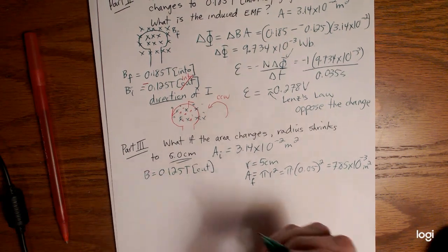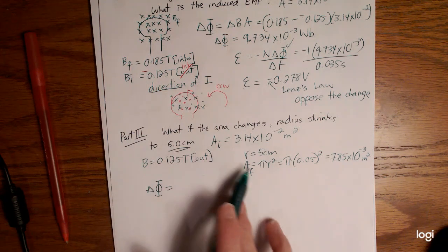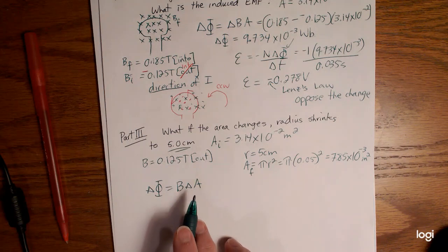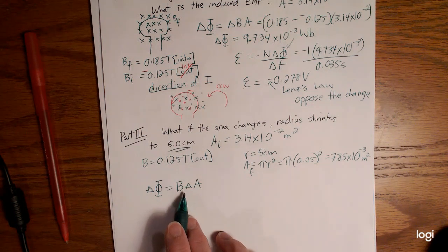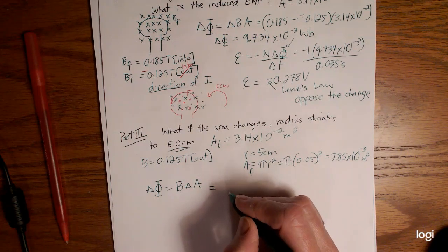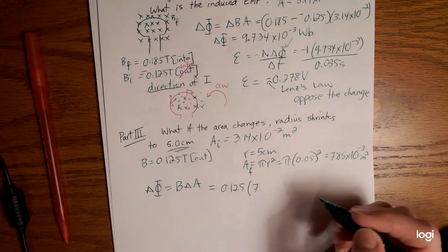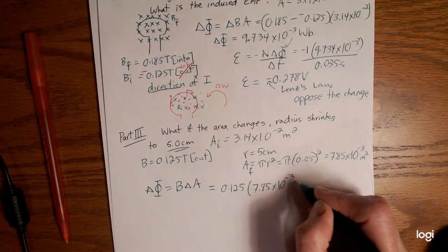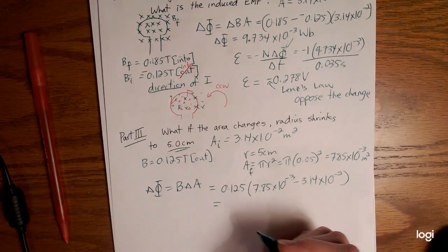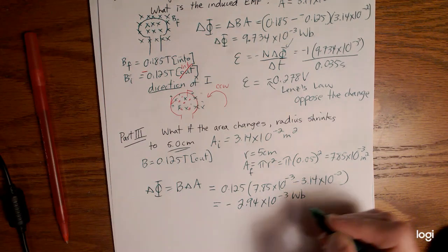Now we can again find the change in flux. You'll notice the flux is changing not because the magnetic field is changing but because the area is changing. So I'm going to rewrite this as B times delta A. So I can induce a current, or well an EMF first, if I have some kind of a change occurring. So here we have our magnetic field 0.125, multiply that by our final area 7.85 times 10 to the negative 3 minus 3.14 times 10 to the negative 2. You'll notice you're going to get a negative answer but that's okay. So we'll get negative 2.94 times 10 to the negative 3 webers.